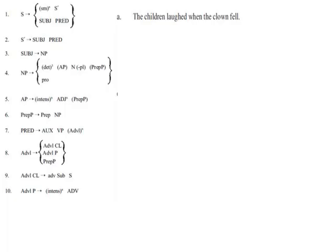In this case, for the children laughed when the clown fell, there is no sentence modifier. There's not a word that modifies the whole sentence. So I cannot use the first line, so I jump it. I go to the second line because I know that in the sentence there is a subject and there is a predicate.